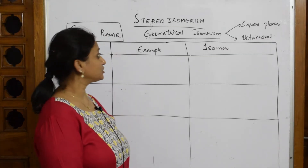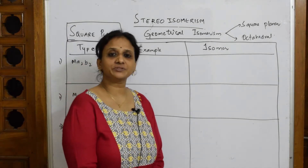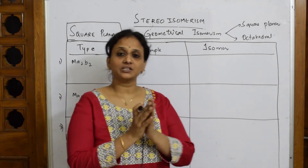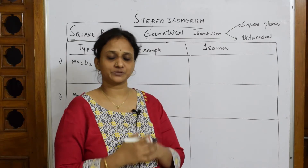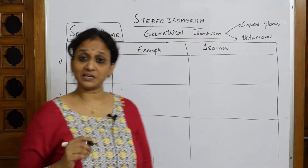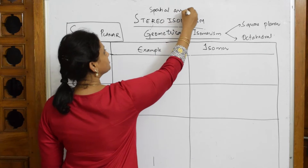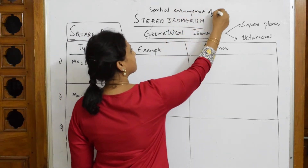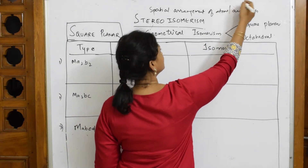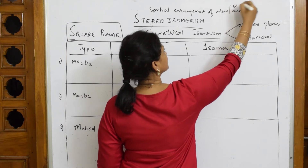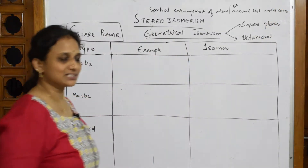Let us come back and learn stereo isomerism. The type of classification we are going to study is geometrical isomerism. How should we define geometrical isomerism? Earlier we said different arrangement of atoms, but here we specifically use the term spatial arrangement — the spatial arrangement of atoms around the metal atom. This is the basic definition.